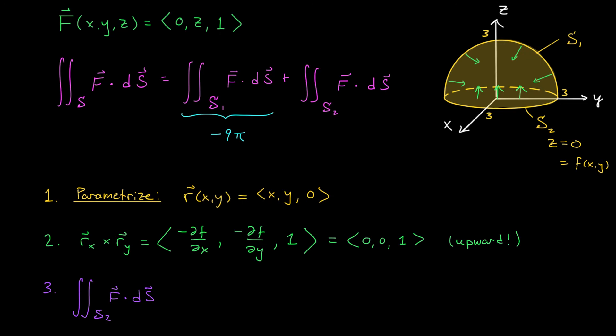Finally, we move on to step three, setting up and evaluating this surface integral. My surface integral is the double integral over D of F · (R_x × R_y) dA. Well, F is the vector field ⟨0, z, 1⟩, and R_x cross R_y is ⟨0, 0, 1⟩. If we take the dot product, we're simply left with the double integral over D of 1 dA. Well, if we're computing the double integral of 1, we're really finding the area of D. D represents the set of all possible x and y values, so it's really this circle right here. We have the area of this circle, and that's 9π.